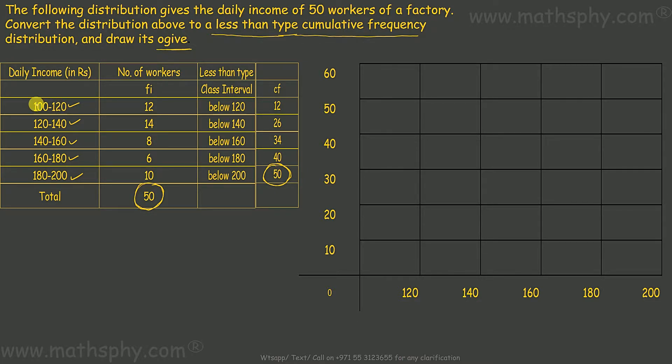120 from this, 140 from this, 160 from this, 180 from this and 200 from this. 120, 140, 160, 180 and 240. And these are the cumulative frequencies. We have cumulative frequencies from 12 to 50. I have taken from 10 to 60.